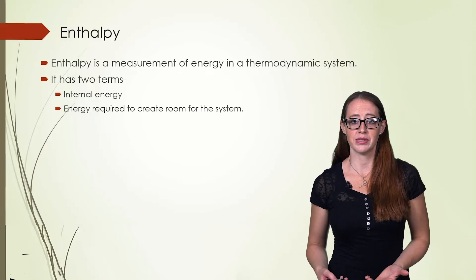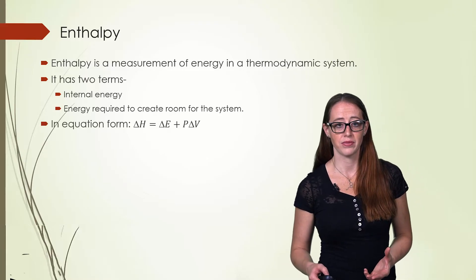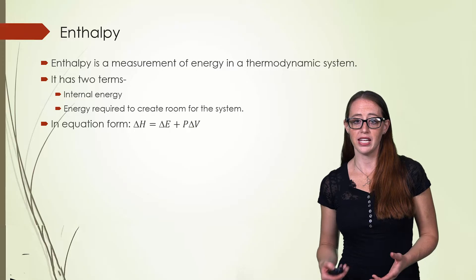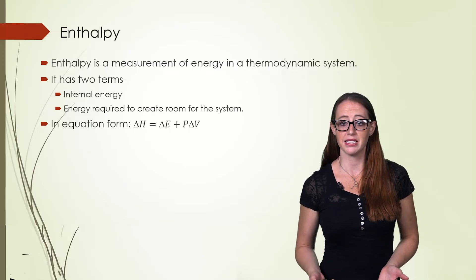The next is the energy that is required to make room for the system. Remember that the system isn't going to exist in a vacuum. The universe and the surroundings exist too. So in this equation, it looks like this: delta H equals delta E plus P delta V.